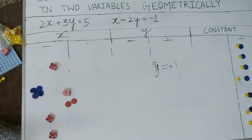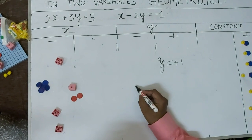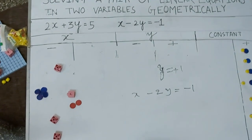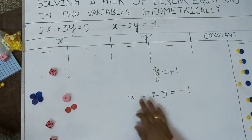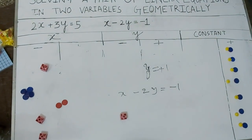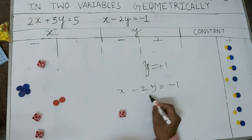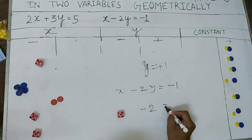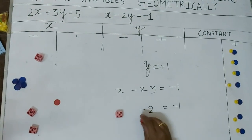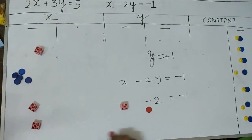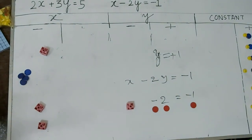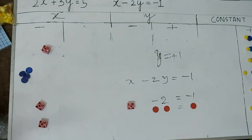Now let us find the value of x. Using the second equation x minus 2y equal to minus 1, we substitute y equal to 1. So minus 2 into 1 is minus 2, giving us x minus 2 equal to minus 1. In the activity, I place one cube for x and two red coins for minus 2, equal to one red coin for minus 1.